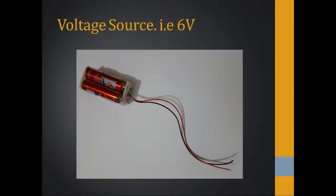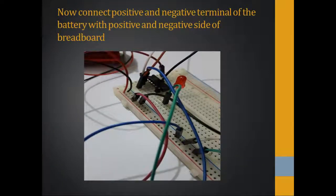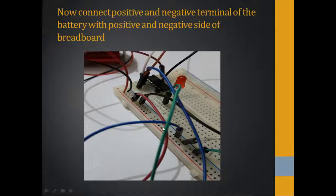The voltage source being used is a 6-volt source. Now connect the positive and negative terminals of the battery with the positive and negative sides of the breadboard. The positive terminal is connected in the positive column of the breadboard and the negative is connected with the negative column.